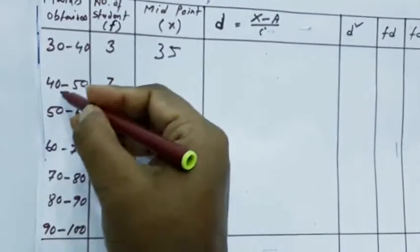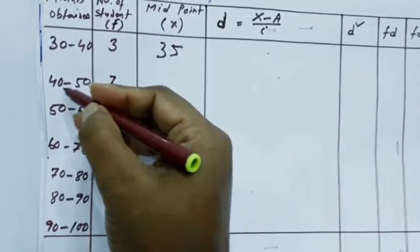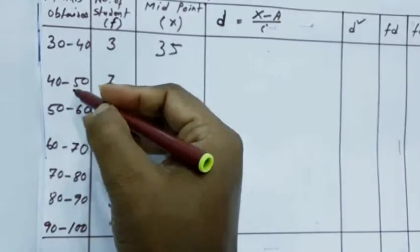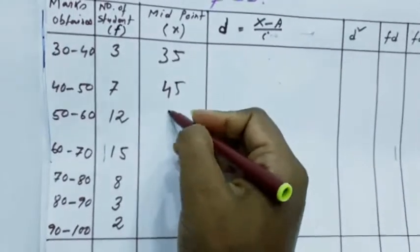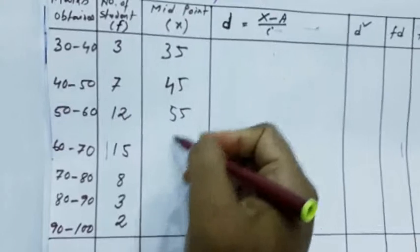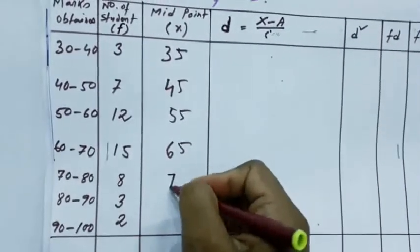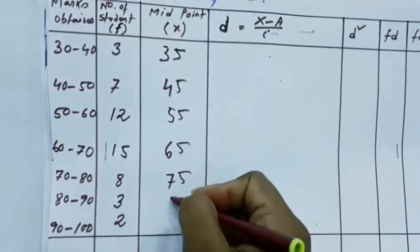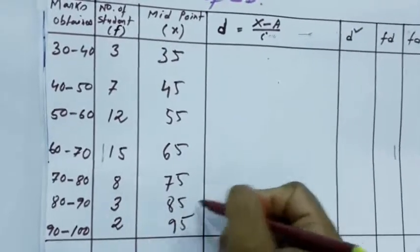Similarly, we will get the average value, 40 plus 50, 90 by 2, 45. In this way, we will get all the values: 55, 65, 75, 85, 95.